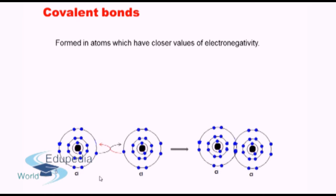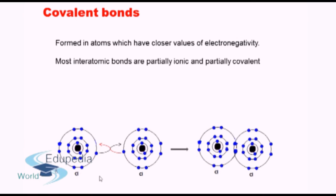The number of bonds depends on the number of valence electrons — for chlorine we have a single bond, for oxygen two bonds, and for nitrogen three bonds. Covalent bonds are normally formed when the two participating atoms have closer values of electronegativity, whereas ionic bonds form when there is a large electronegativity difference. In reality, most bonds are partially ionic and partially covalent — more covalent if atoms are closer in electronegativity, more ionic if they are further apart.